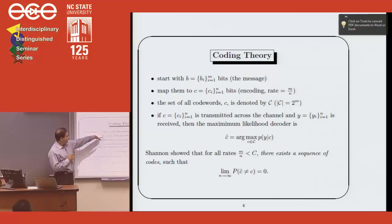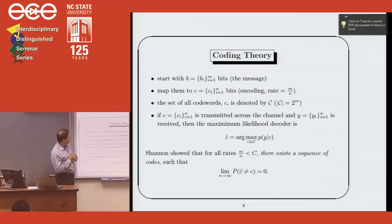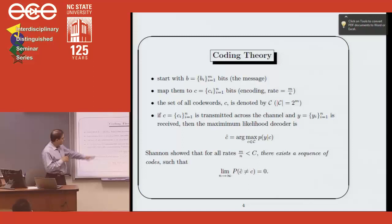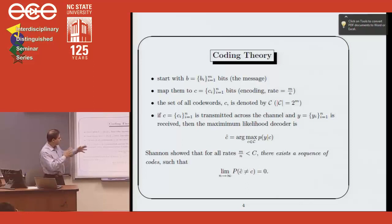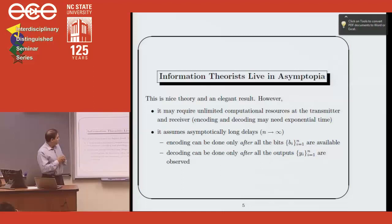In coding theory, you have some collection of m bits called the message. You map them to a longer sequence of n bits, and the coding rate is m over n. So if I map to twice as many bits, it's a rate one-half code — I'm adding redundancy. Then I send these n bits across the channel and do some kind of decoding. If the rate is below the capacity, then as the block length goes to infinity, the probability of error goes to zero. That's the idea of block coding.